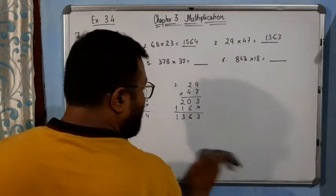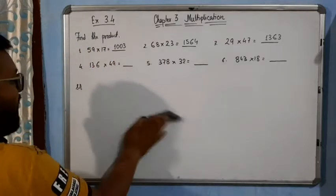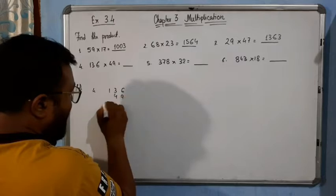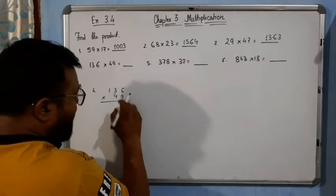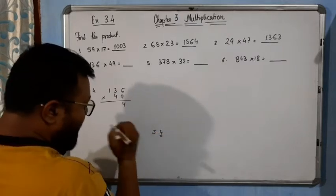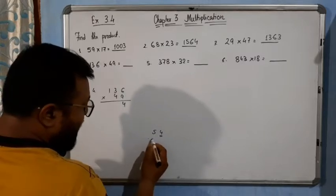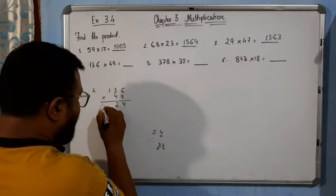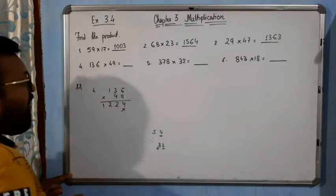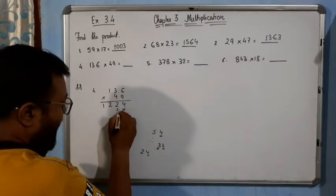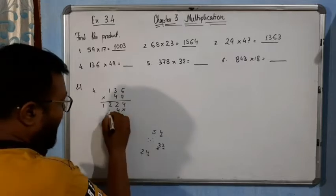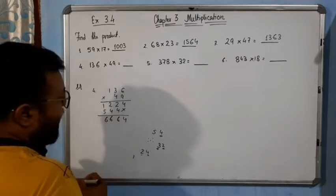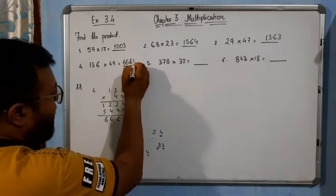Now come to question number 4, 5, and 6. For question 4: 36 is multiplied by 49. 9 times 6 is 54, write 4 carry 5. 9 times 3 is 27, plus 5 is 32, write 2 carry 3. Then 4 times 6 is 24, write 4 carry 2. 4 times 3 is 12, plus 2 is 14, plus 1 carry is 5. So the answer is 1764.